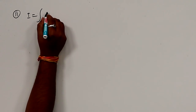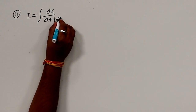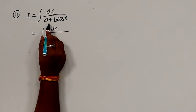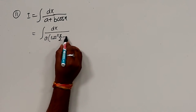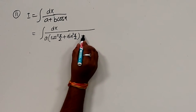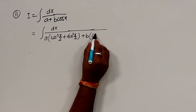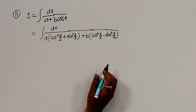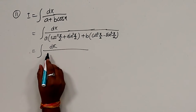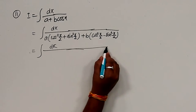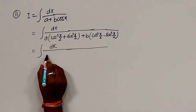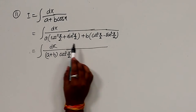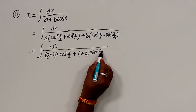अब दूसरा समाकलन: माना i = ∫ dx/(a + b·cos x)। इसे सरल करने के लिए a के स्थान पर (cos²(x/2) + sin²(x/2)) गुणा करेंगे और cos x को लिखेंगे (cos²(x/2) − sin²(x/2))। अब a और b के गुणांकों को collect करेंगे।